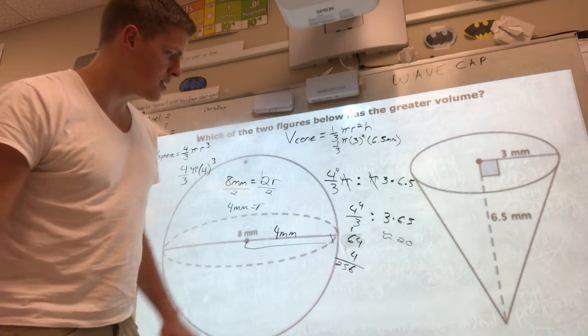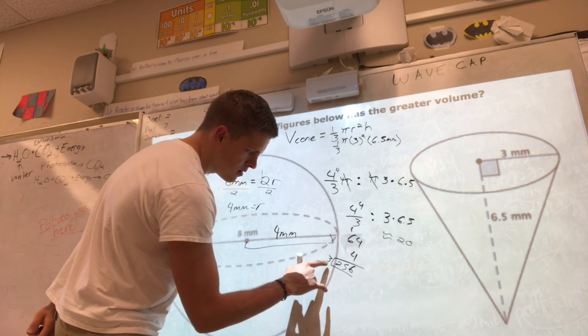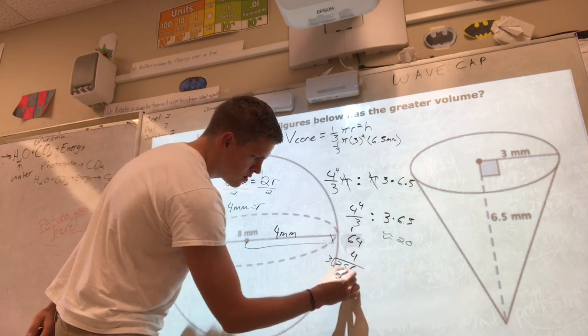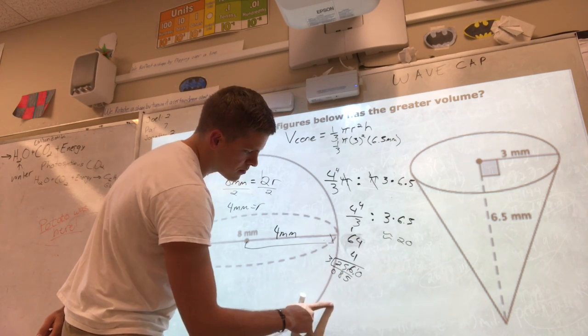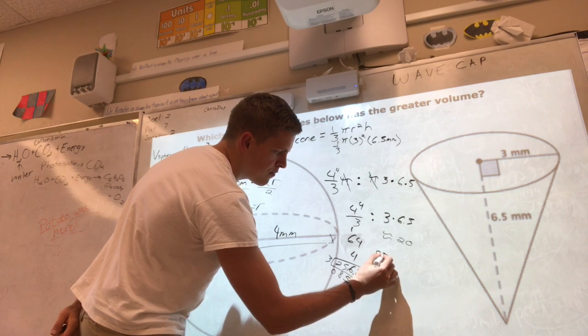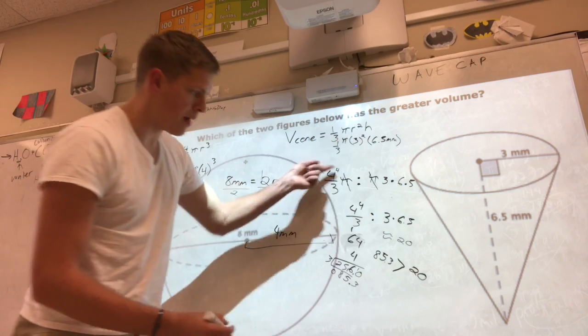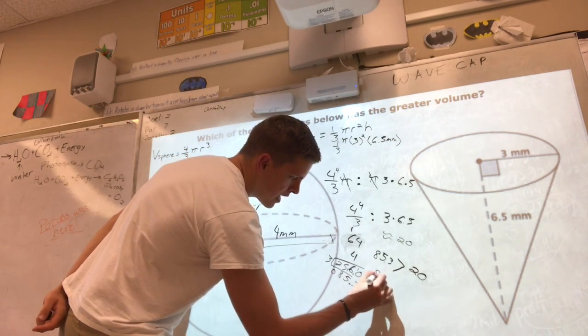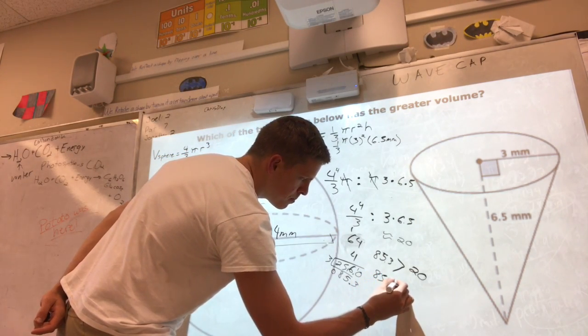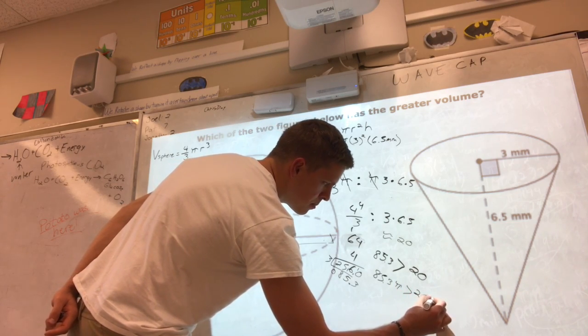So 256 divided by 3. Let's see, 3 into 2's. So this will be about 85.3, which is greater than 20. And we can bring the pi back, so it's gonna be about 85.3 pi is greater than 20-ish pi.